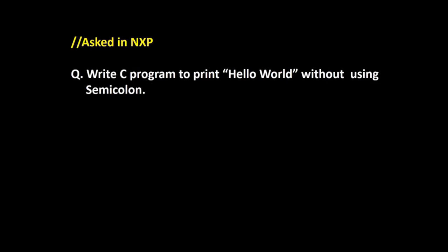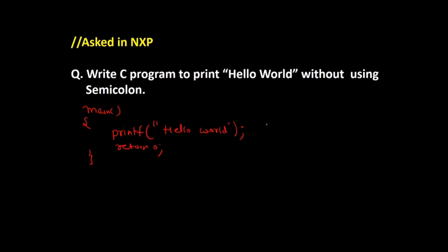Hello friends. This is a famous interview question: print 'Hello World' without using a semicolon, or print any given string but without using any semicolon. Normally what we do is use printf with our message and then a semicolon, with return zero — that's the normal way. But the question says you cannot use a semicolon, and the output should still be 'Hello World' printed on the screen.